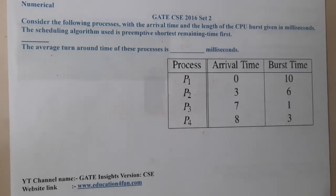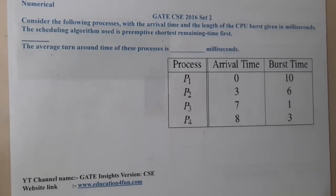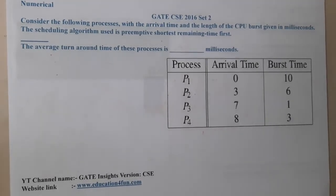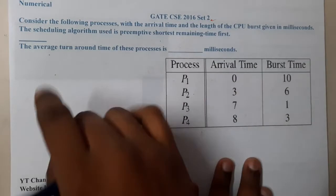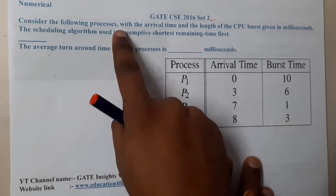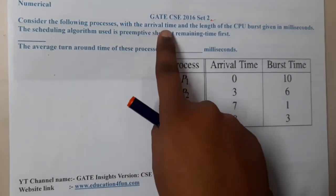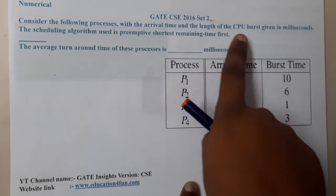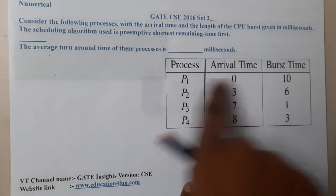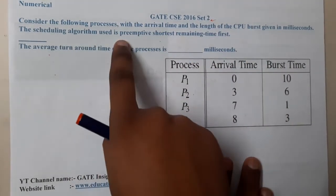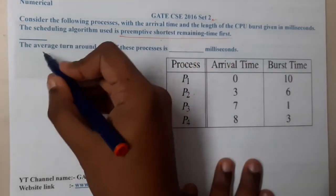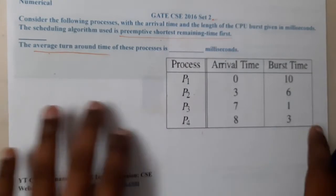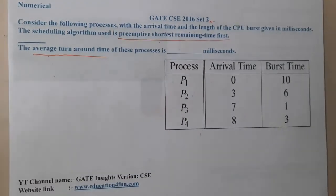Hello guys, we are back with our next lecture. This question belongs to GATE CSC 2016 Set 2. The given question asks us to consider processes with arrival times and the length of CPU burst given in milliseconds. The scheduling algorithm used is preemptive Shortest Remaining Time First (SRTF), and they are asking for the average turnaround time of these processes.